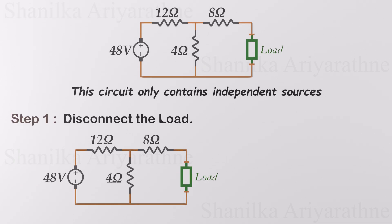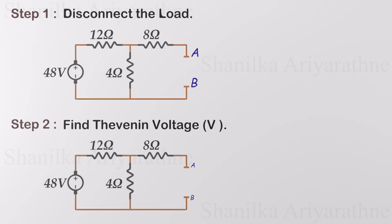The first step is disconnecting the load. Remove the load resistance and keep nodes A and B disconnected. Now we can analyze the circuit without the influence of the load. Now we can calculate the voltage across nodes A and B. This is the Thevenin voltage.